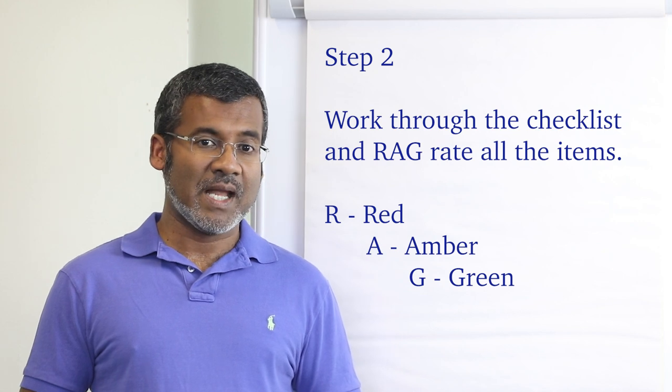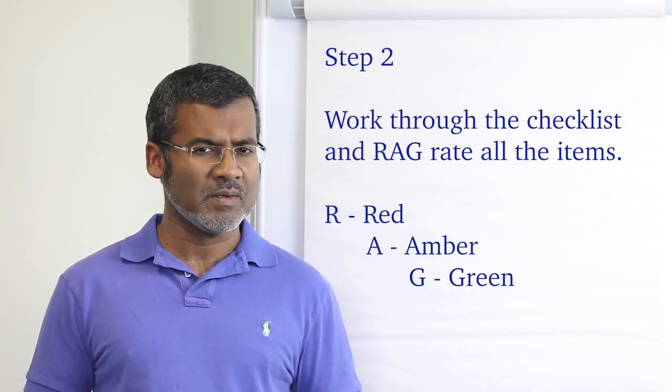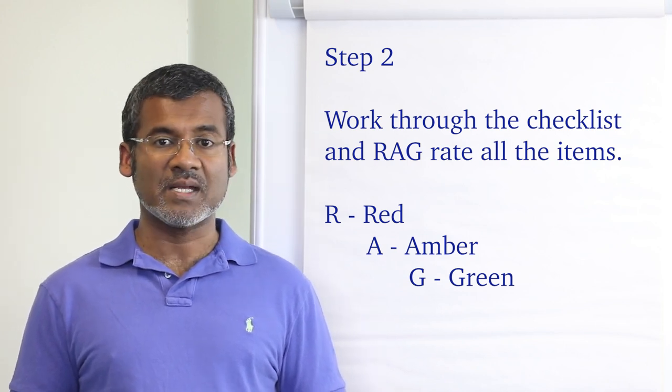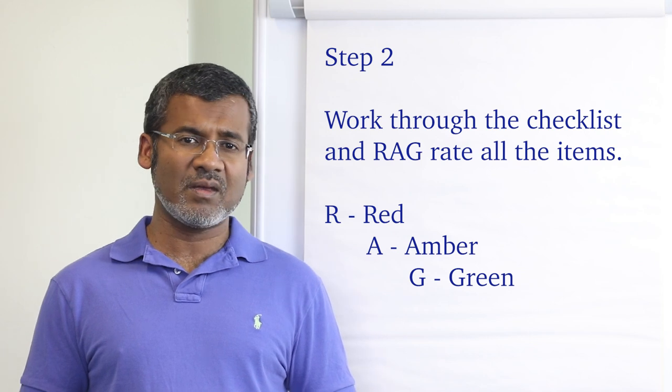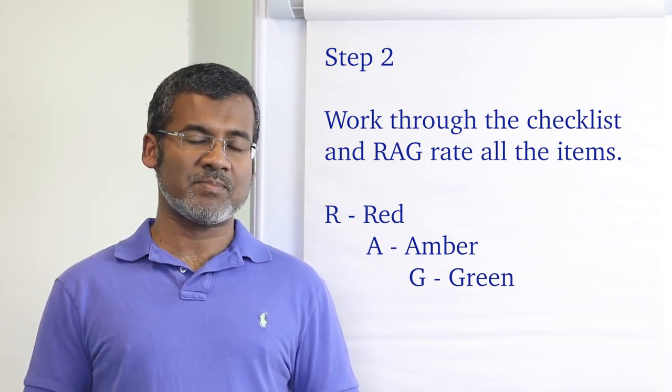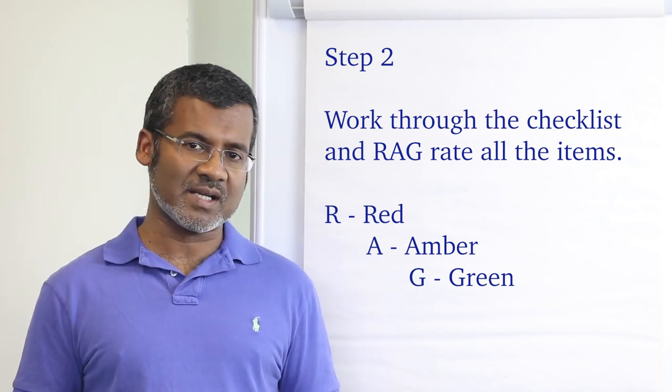Step number two. Now work through the list item by item and RAG rate it. RAG rate it, you ask? RAG stands for red, amber and green. Red, if you don't know anything about that subject. Amber, if you know something about that subject. And green, if you think you have absolutely nailed that subject. That is, you know it really well. Do that for the entire list.